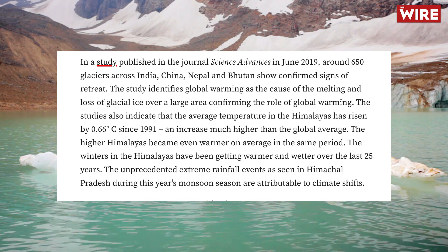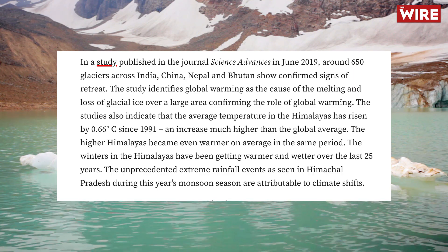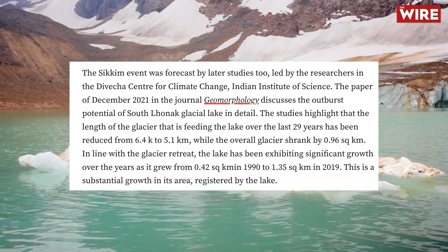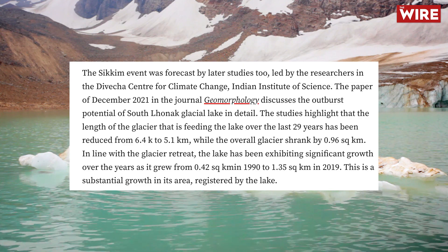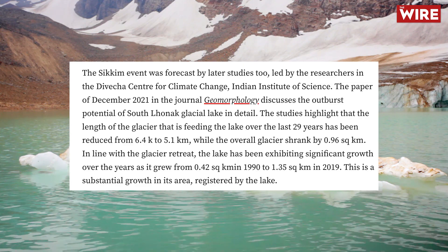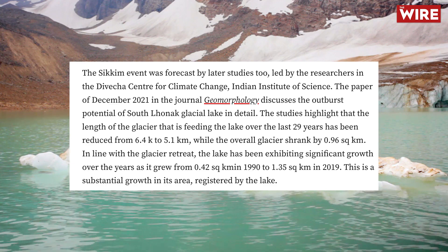This warming trend resulted in warmer, wetter winters over 25 years and contributed to extreme rainfall events. Warnings were raised as early as December 2021, when the Indian Institute of Science published research on South Lonak Glacial Lake revealing a shrinking glacier reduced from 6.4 kilometers to 5.1 kilometers in 29 years. The overall glacier area decreased by 0.96 square kilometers while the lake expanded remarkably from 0.42 square kilometers in 1990 to 1.35 square kilometers in 2019.